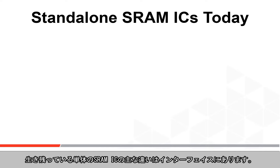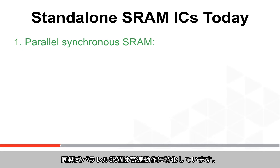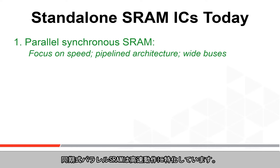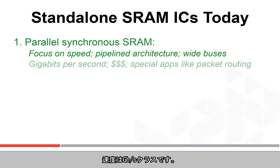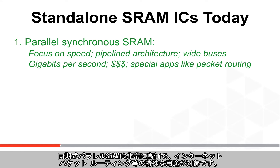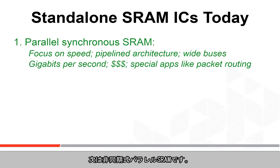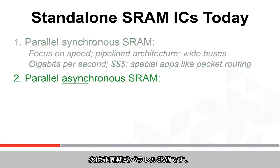For the surviving standalone SRAM integrated circuits, differences come primarily in the interfaces. Parallel synchronous SRAM focuses on blazing speed — they are pipelined with edge clocks on the inputs and outputs to the IC, and speed is measured in gigabits per second. These are quite expensive and targeted at specialty applications like internet packet routing.